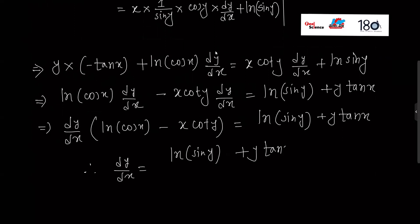Collecting all dy/dx terms on one side, the final result is: dy/dx equals y times tan x plus ln(sin y), divided by ln(cos x) minus x times cot y. This is the final result.